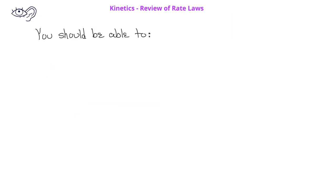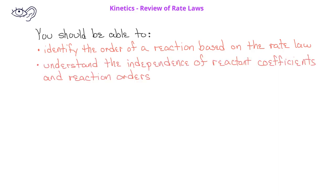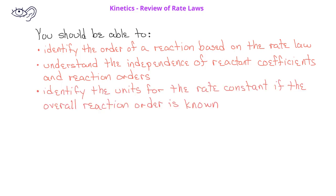By now, you should be able to identify the order of a reaction if you're given the rate law for that reaction. You should be able to understand the independence of the reactant coefficients and reaction orders. Finally, you should be able to identify the units for the rate constant if the overall reaction order is known.